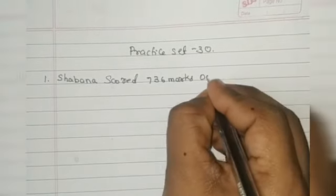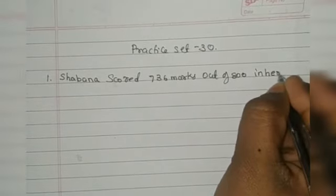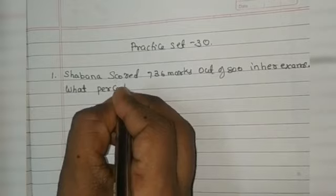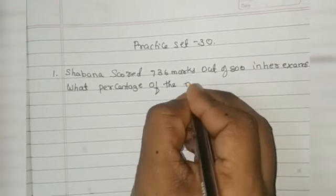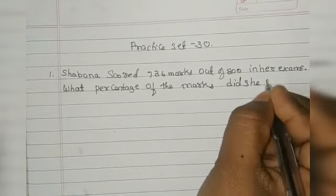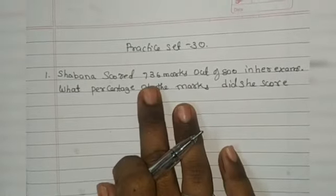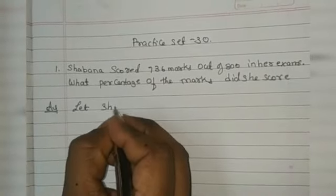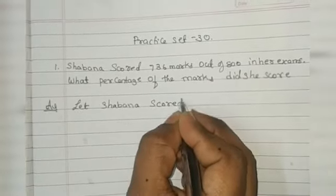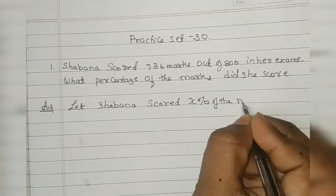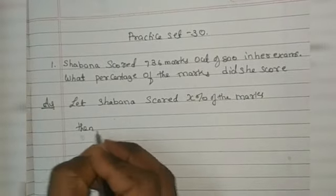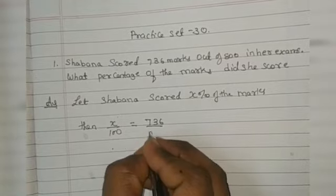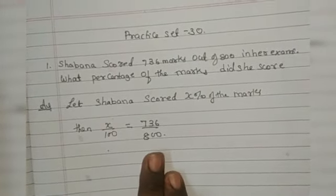Problem 1: Sabna scored 736 marks out of 800 in her exam. What percentage of marks did she score? Let Sabna score x percentage of the marks. Then x divided by 100 equals 736 divided by 800.